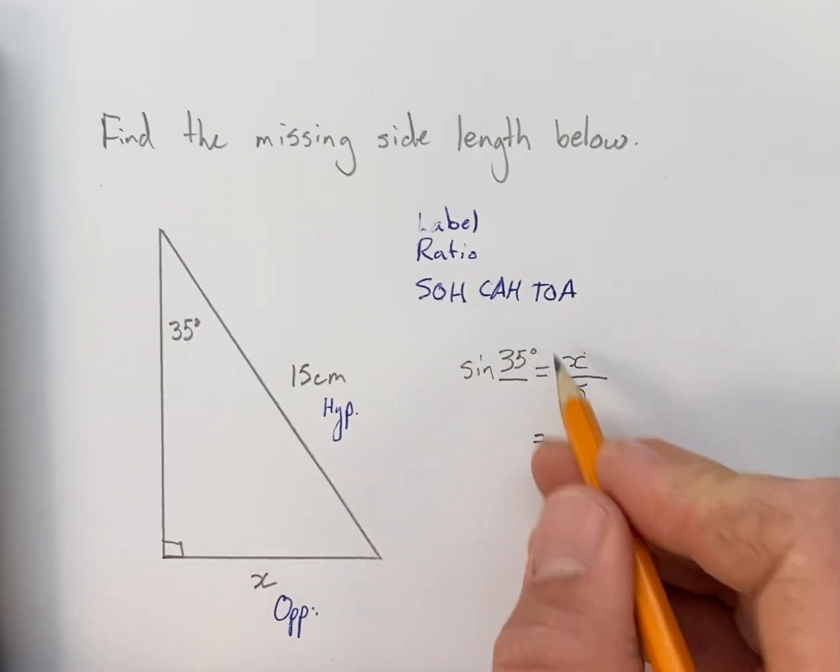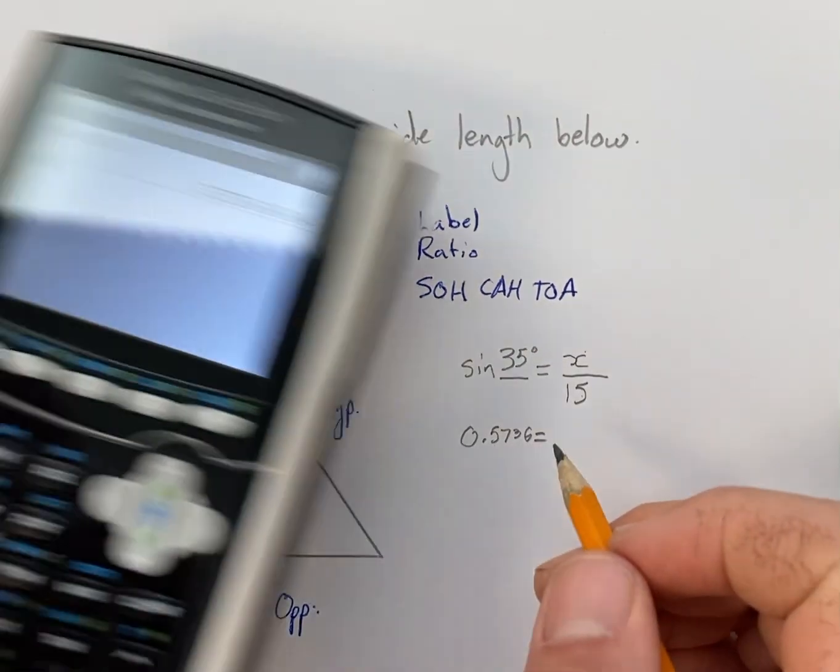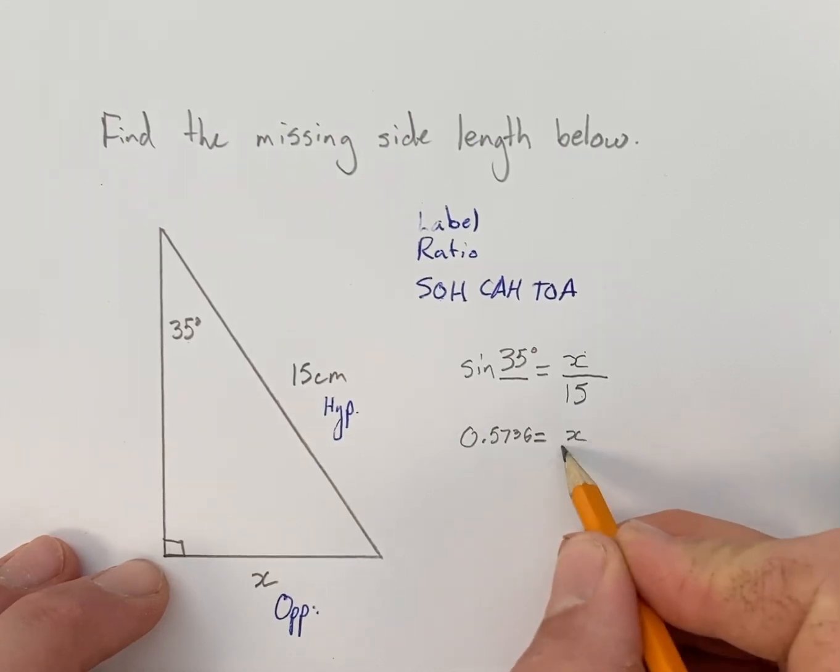So we'll replace sine of 35 with 0.5736. That's what our answer was to four decimal places here. Now this will be equal to X over 15.